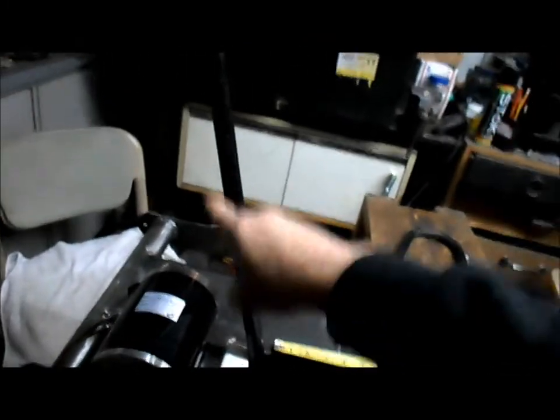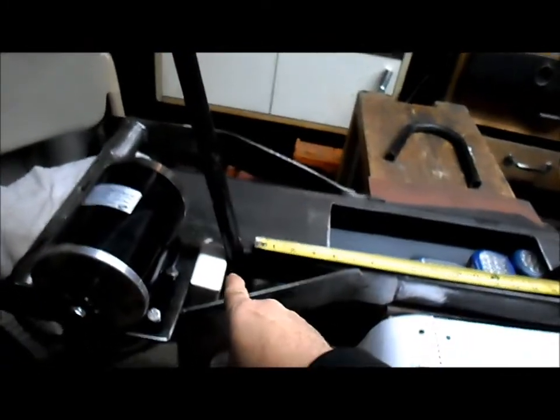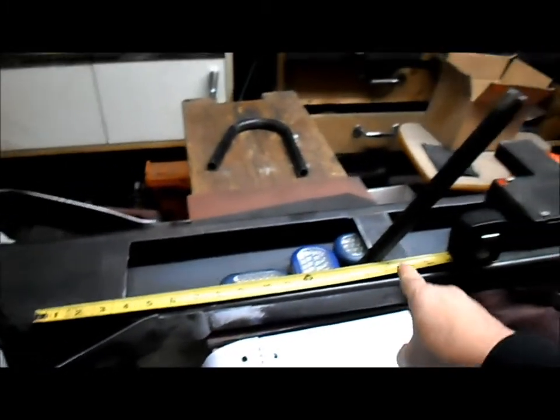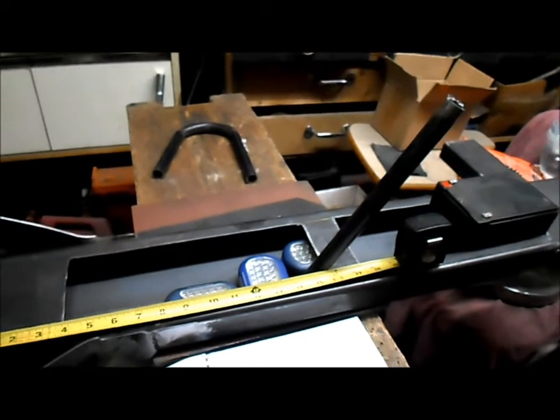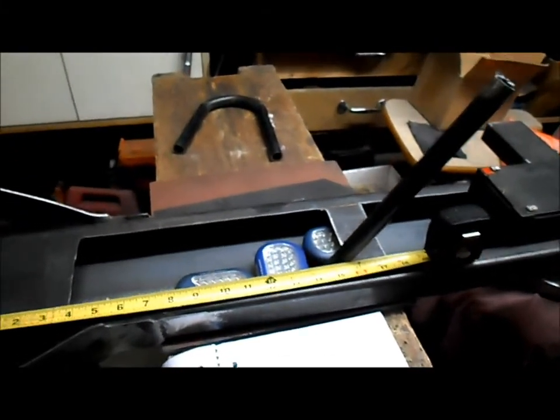So, our roll bar would come down here and seat back, come along the frame and then come up and then we'd cap it off with the bent piece of pipe cap over here.